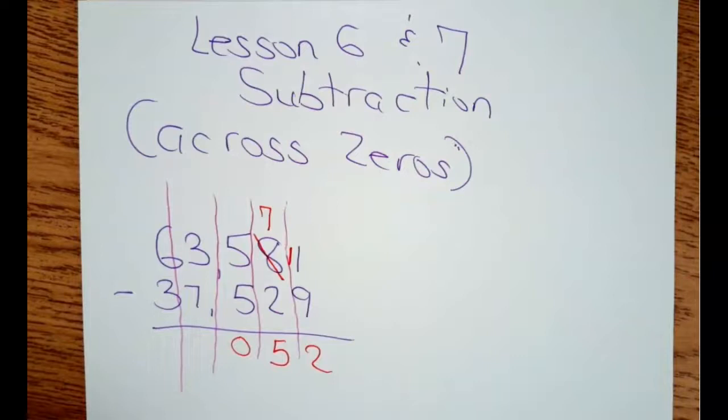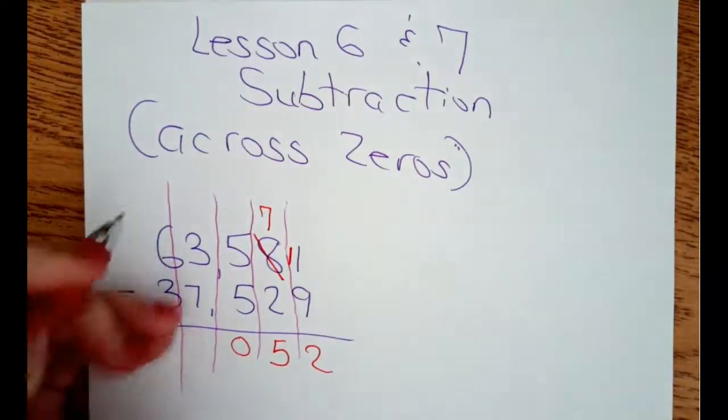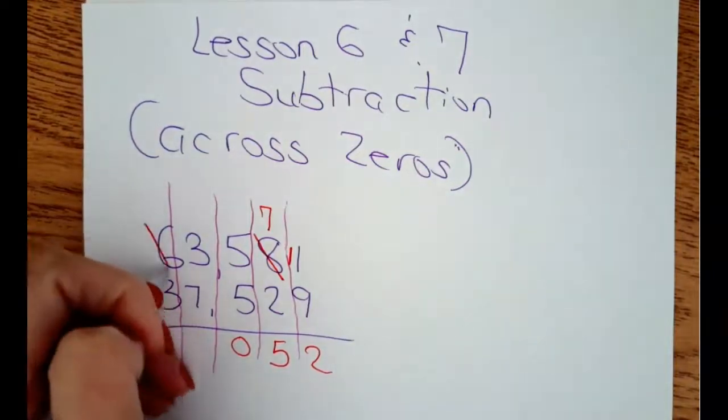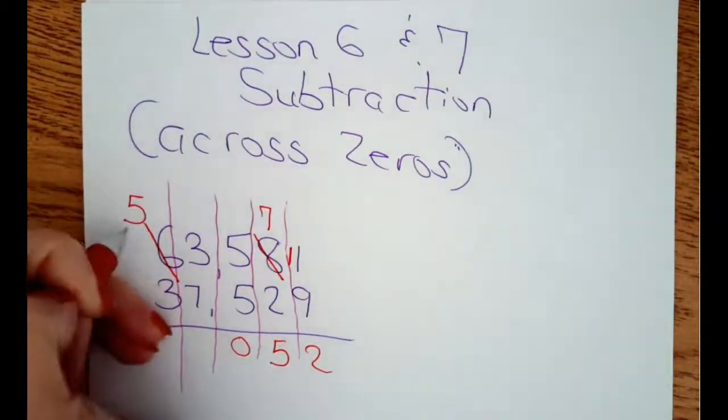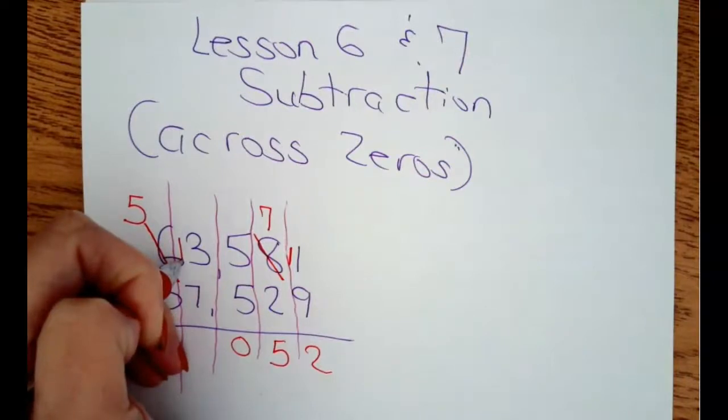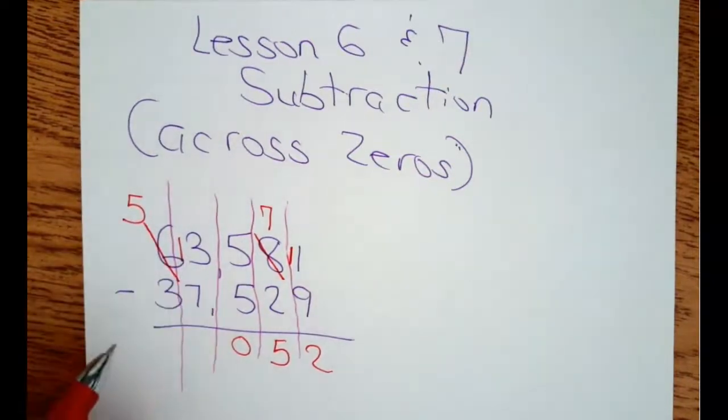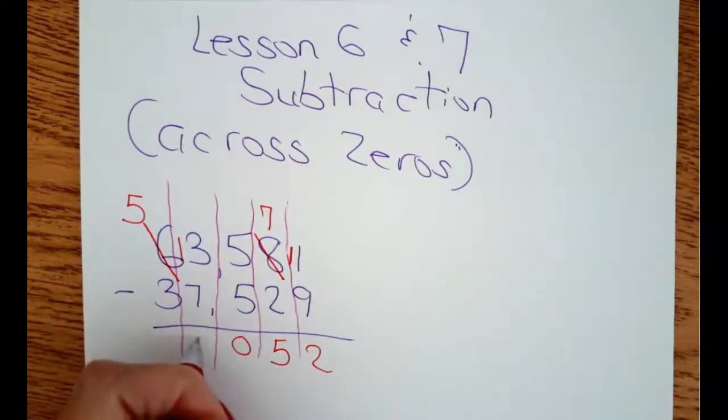Five minus five is zero. Three minus seven. Can't do. But does your neighbor have one that you can take? Yes. Step one. Cross him out. Reduce him by one. He becomes five. The one that you took goes right in front of the guy that needs help. So three becomes thirteen. Thirteen minus seven—if you don't know your facts, count up from seven to thirteen. It should be six. And five minus three is two.